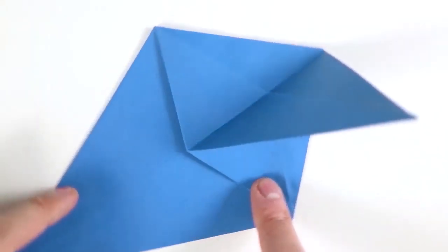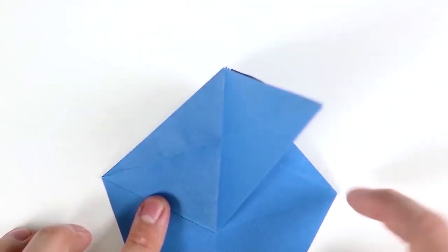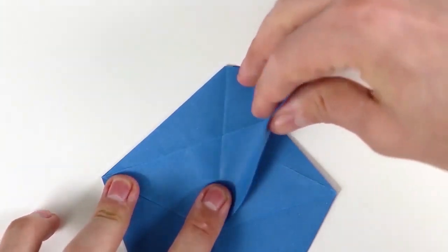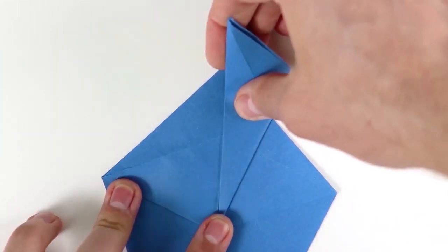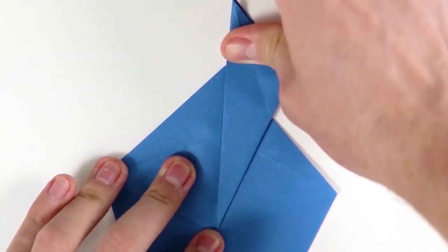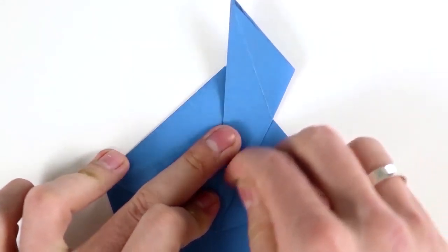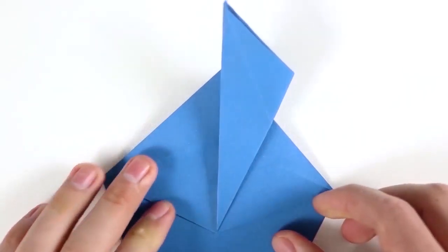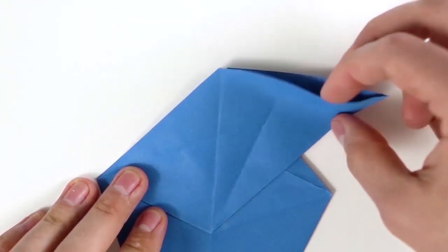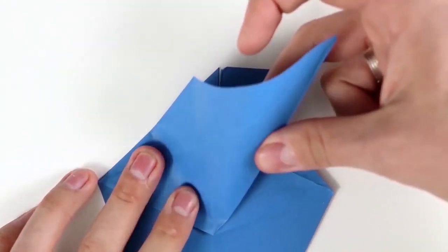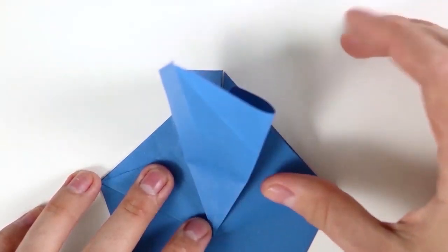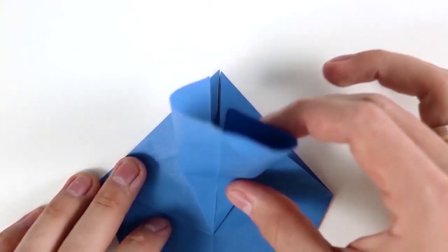Bring it to the side. And fold the diagonal to the vertical. Unfold. Open it. And flatten the paper, giving this shape.